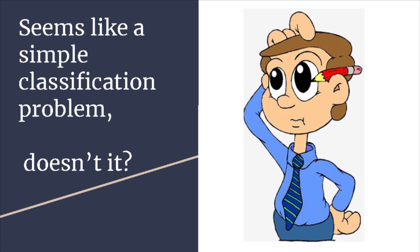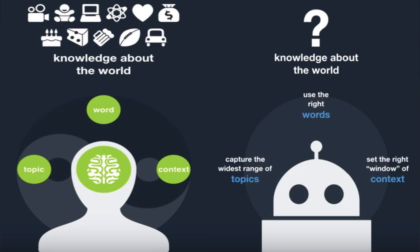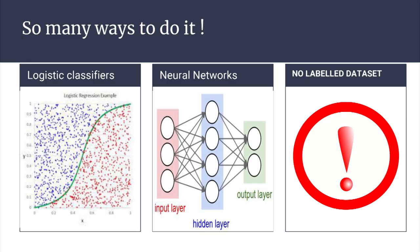Those who have a basic overview of machine learning might think this seems like a simple classification problem. We have many ways to solve classification problems such as logistic classifiers and neural networks. All you need is a dataset and you train it. But this exactly is the problem — we do not have ample labelled data for this problem, so we need to look further.